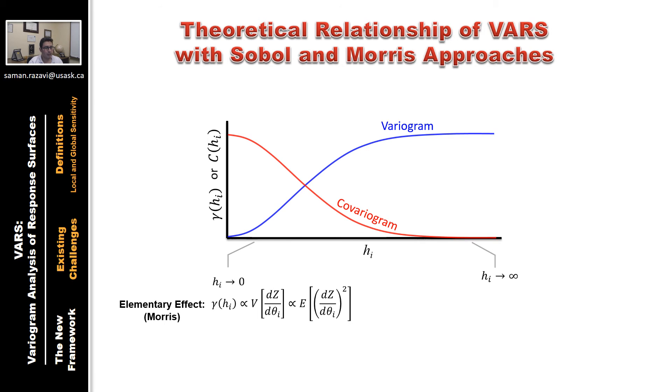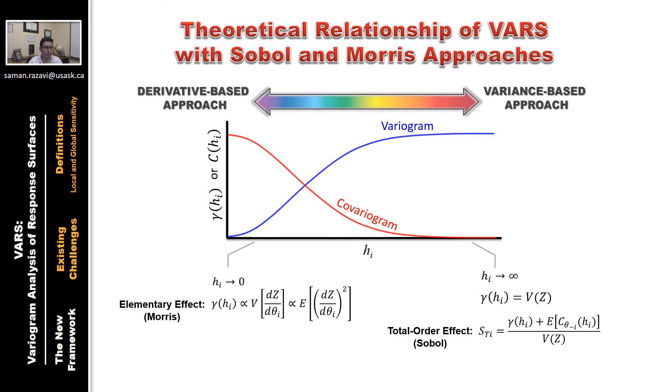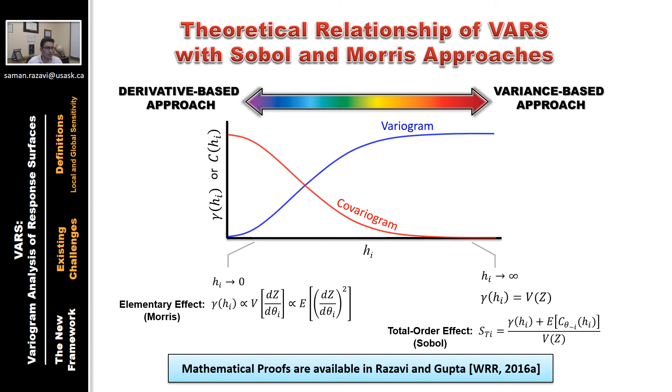For large h, gamma approaches total variance of the response surface, the variance of the process, basically. And with some math, you can calculate Sobol total order effect from variogram and covariogram functions through this equation. So, VARS bridges the gap between the two approaches. And in the middle, it provides a little more information. The proofs of these derivations are available in the papers that we've already shown.